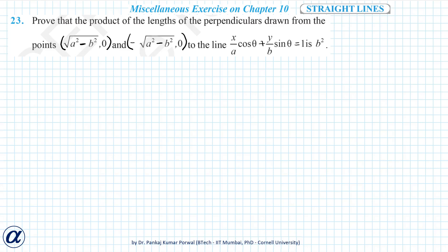In this question, we have to prove that the product of lengths of perpendiculars drawn from the points (√(a²−b²), 0) and (−√(a²−b²), 0) to the line x/a·cosθ + y/b·sinθ = 1 is b².